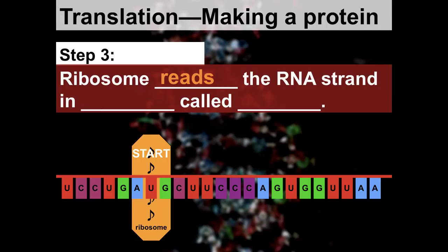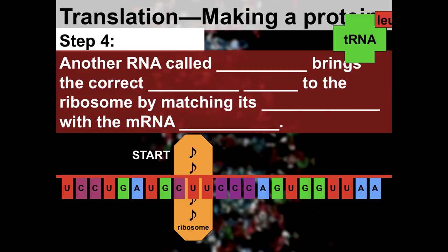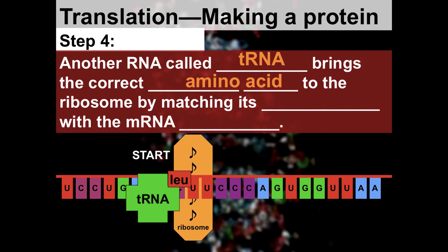The ribosome reads the RNA strand in triplets called codons. Each codon is three letters that code for an amino acid. The ribosome always reads starting at the start codon AUG. Another type of RNA called tRNA (transfer RNA) brings the correct amino acid to the ribosome by matching its anti-codon with the messenger RNA's codon.